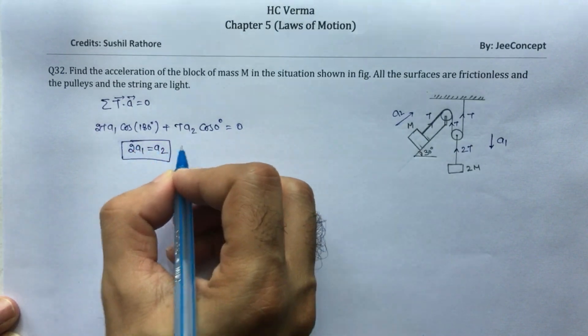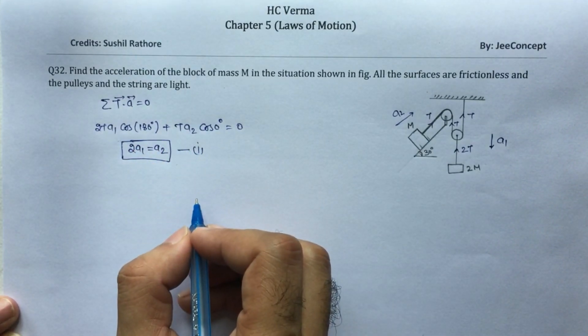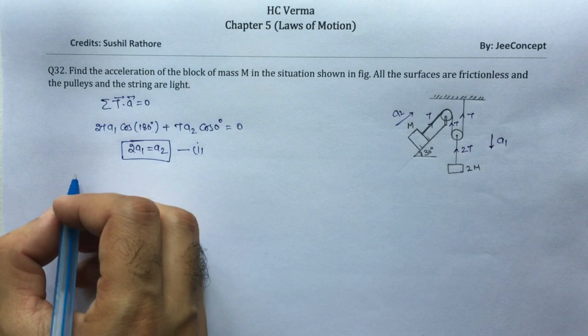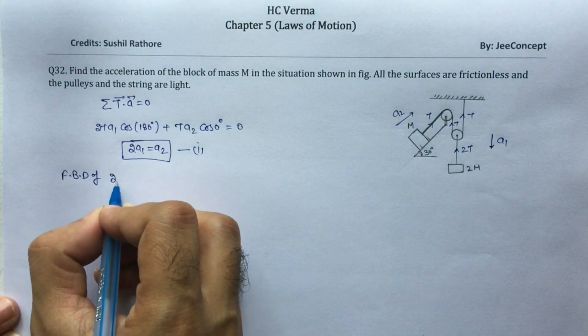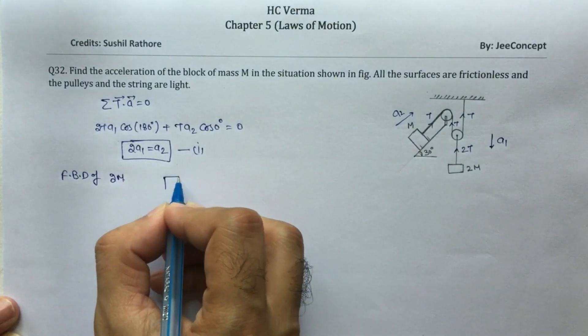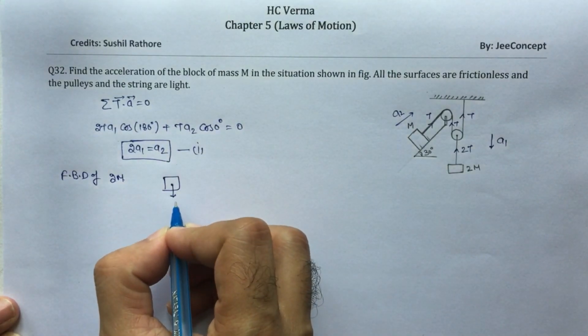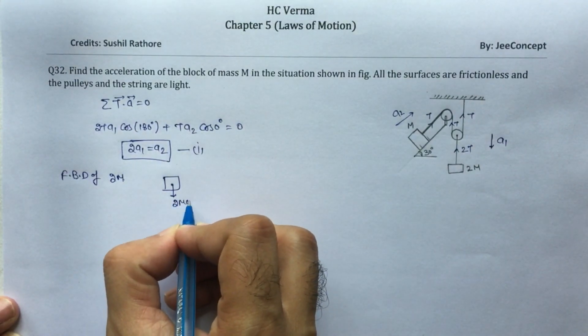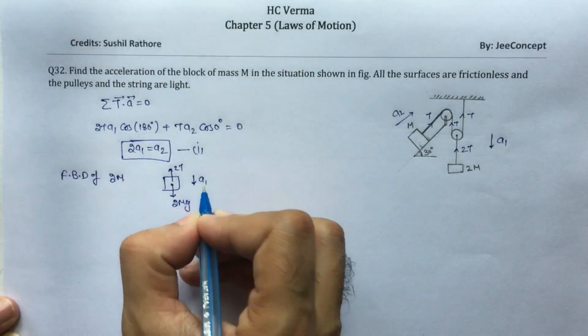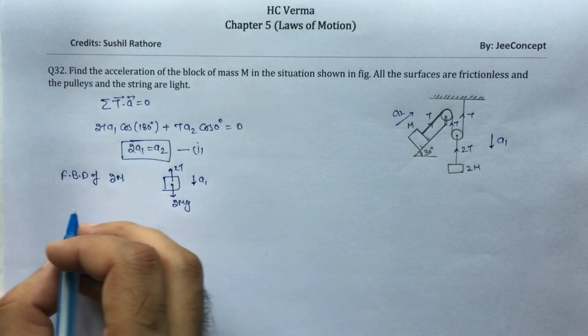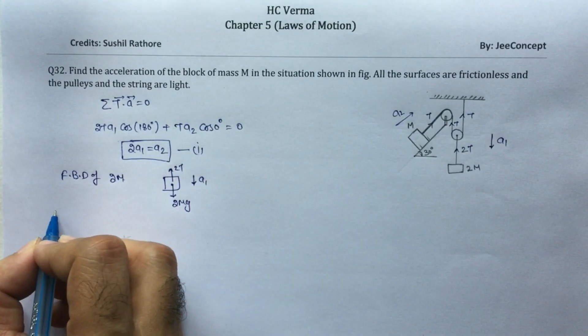Now the FBD of 2m block. This is going to be 2mg downward, tension 2T upward, acceleration a1 downward. So the equation will become 2mg minus 2T equals 2m·a1.